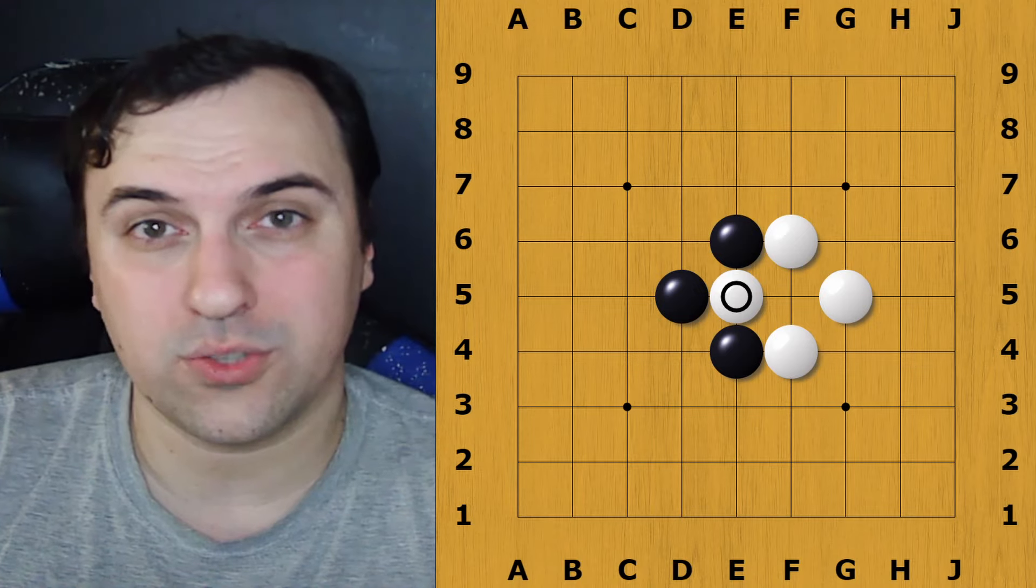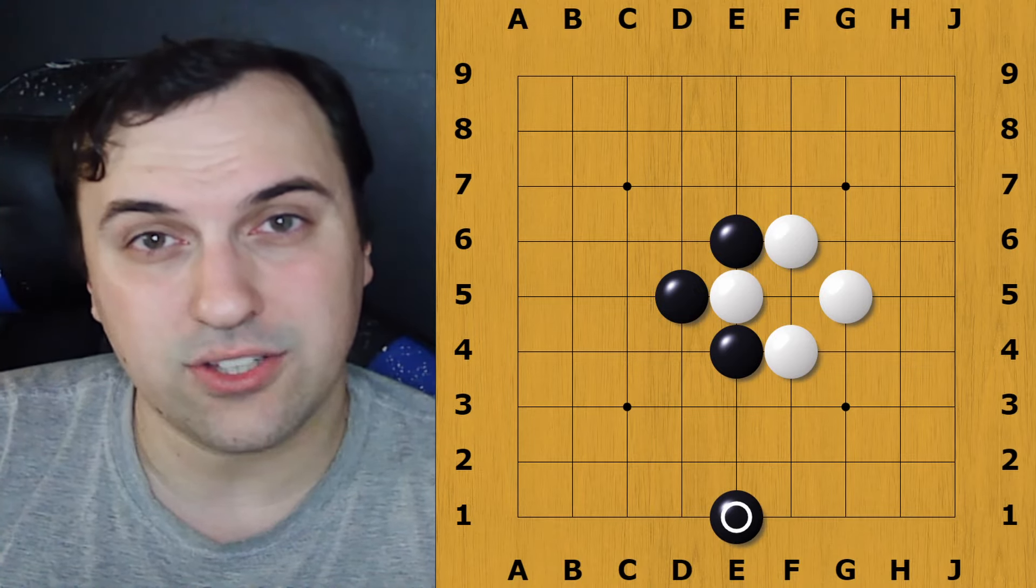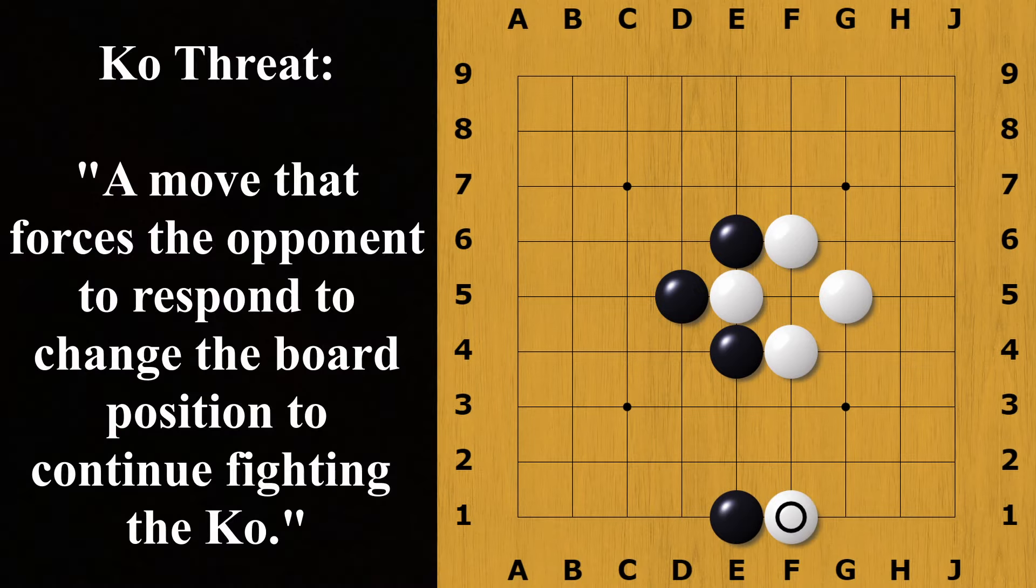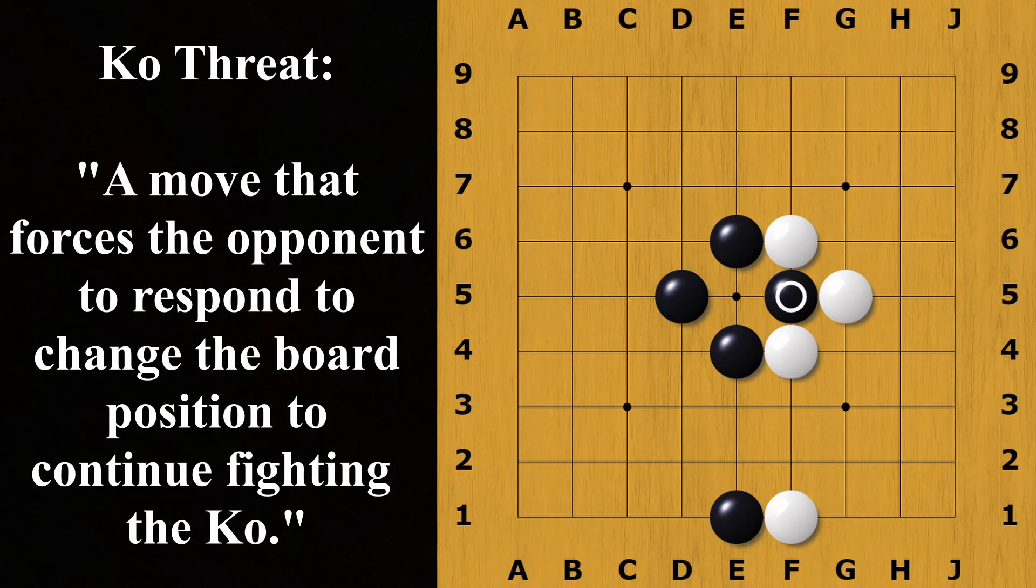To change the status of the person who is winning the Ko, a player may choose to play elsewhere to try to make the opponent respond. This is known as a Ko threat, or rather a move that forces the opponent to respond, to make the board state different, and thus can take the Ko back on the next turn.